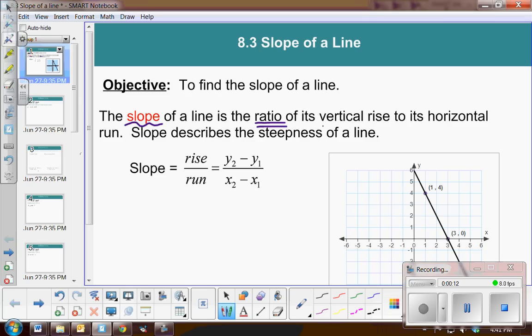But what am I comparing? I'm comparing the vertical rise to its horizontal run. So what I am really finding is the rate of change. What is the rate of change of this linear function? Sometimes we'll refer to it as the steepness of a line.